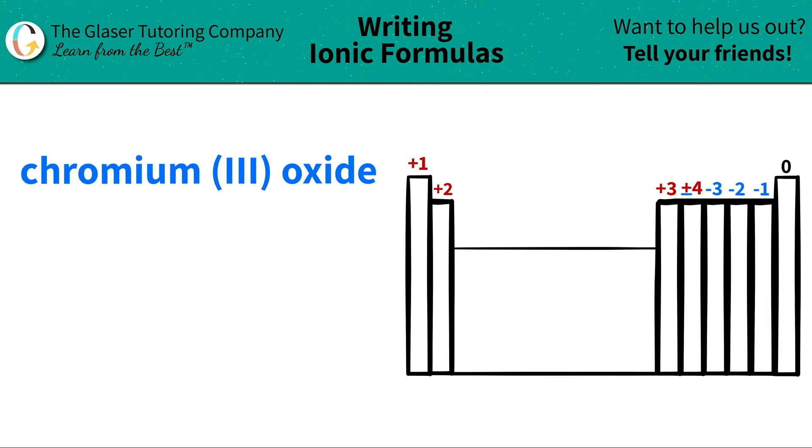Today, we're going to be writing the formula for the ionic compound chromium (III) oxide. So let's see where these elements are located on the periodic table, and then we'll write the formula from there.